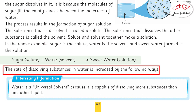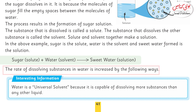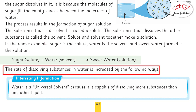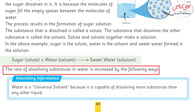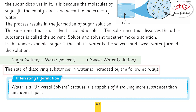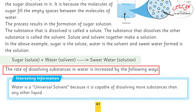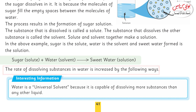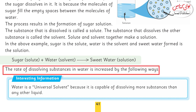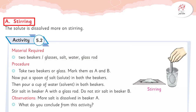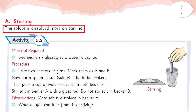The rate of dissolving a substance in water can be increased by the following ways. Number one is stirring — the solute dissolves more quickly with stirring. When you have a glass of sugar water and you stir it, it helps the sugar dissolve faster.